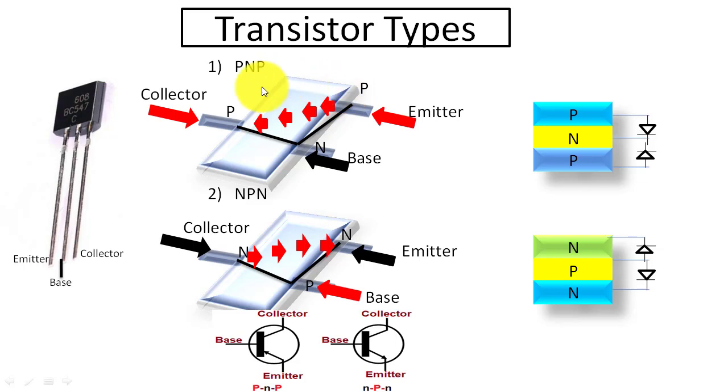We can see here its upper side pin is collector and lower left side pin is base and right side pin is emitter. Here is PNP transistor. It is same also for NPN transistor.